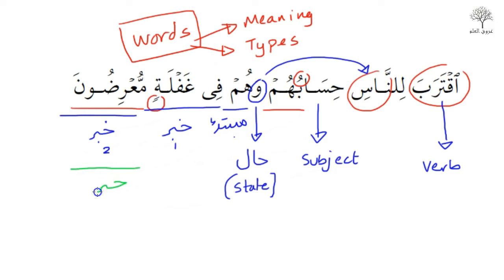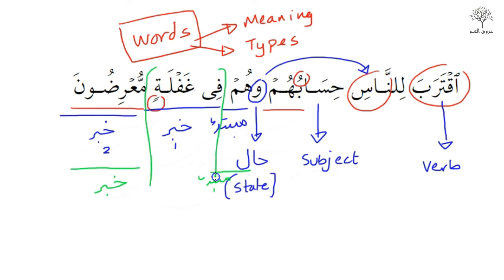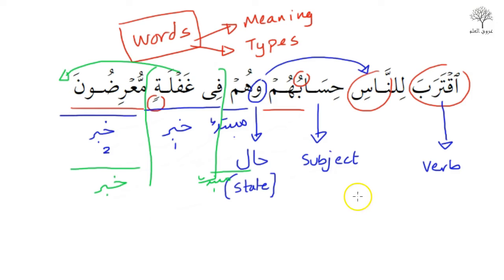Hum is the mubtada. In between the mubtada and the khabar, you have these two words fi ghaflatin. Fi ghaflatin here can occur as the haal — that's one possibility — because it was supposed to occur after the word mu'ridoon. But by bringing it forward, you can treat it as the haal, and that will affect the meaning of the sentence as well.